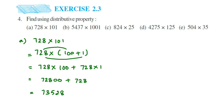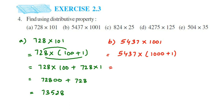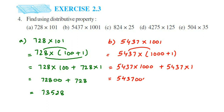Let us do the second question. We have 5437 multiplied by 1001. I hope you understood so far which number we are going to split — we are going to split 1001 as 1000 plus 1. Open the bracket and multiply: 5437 with 1000, then plus 5437 multiplied by 1. We have three zeros here, so just write the number followed by three zeros plus the same number. This will be equal to 5442437.